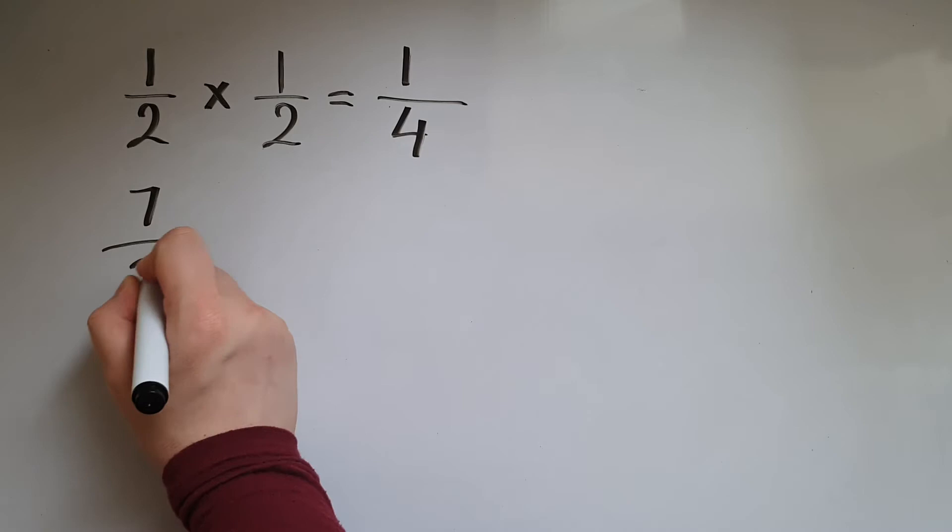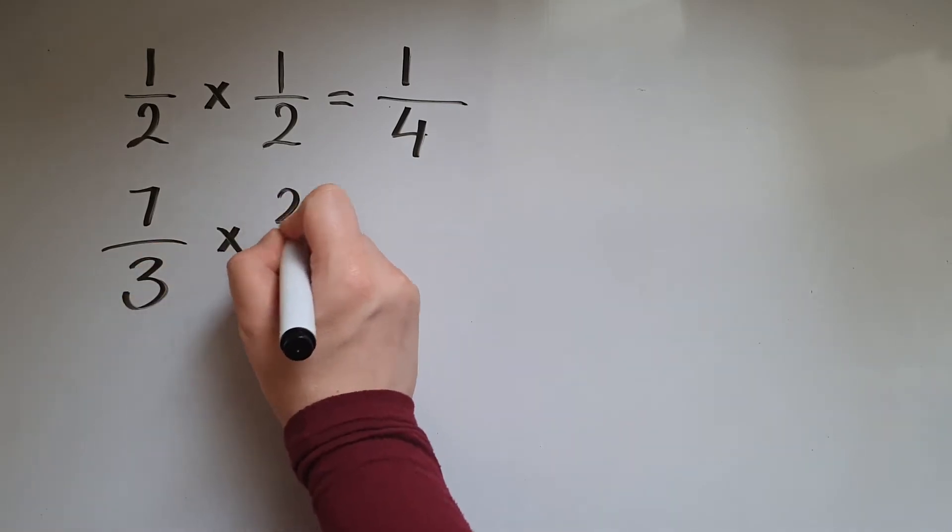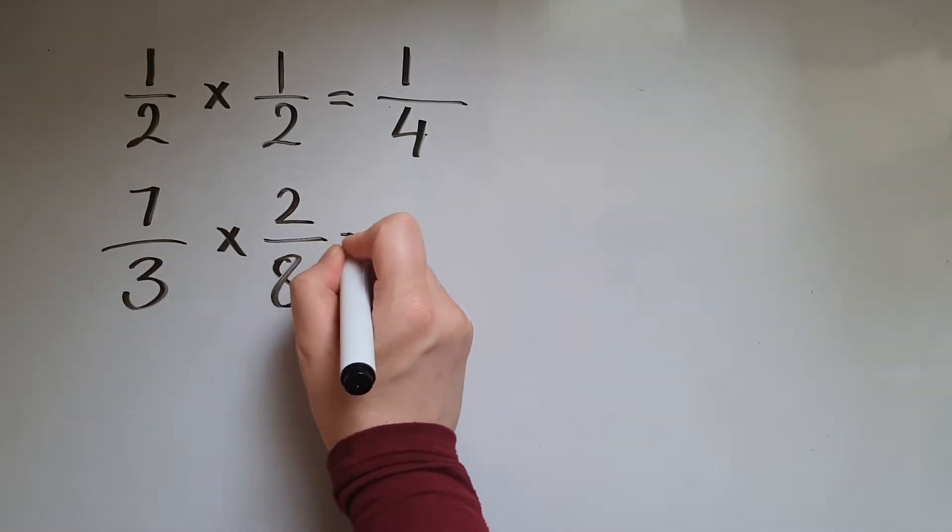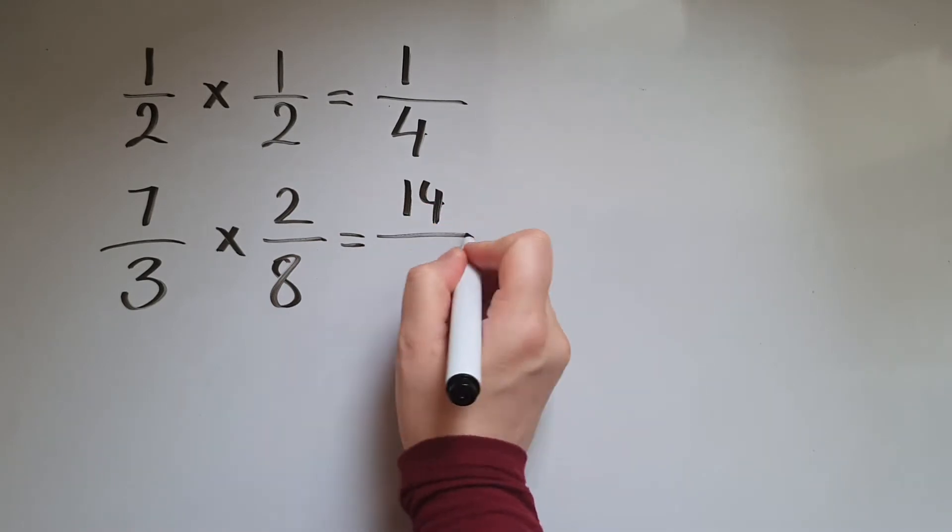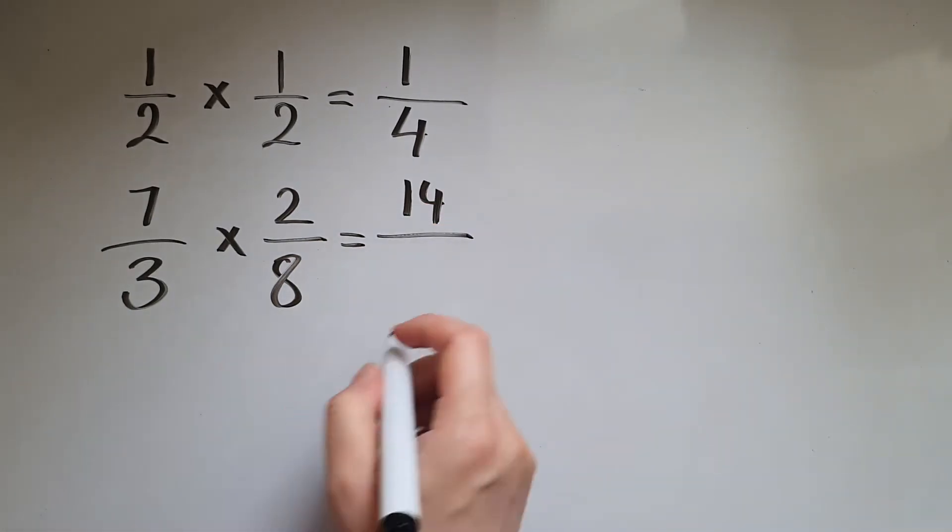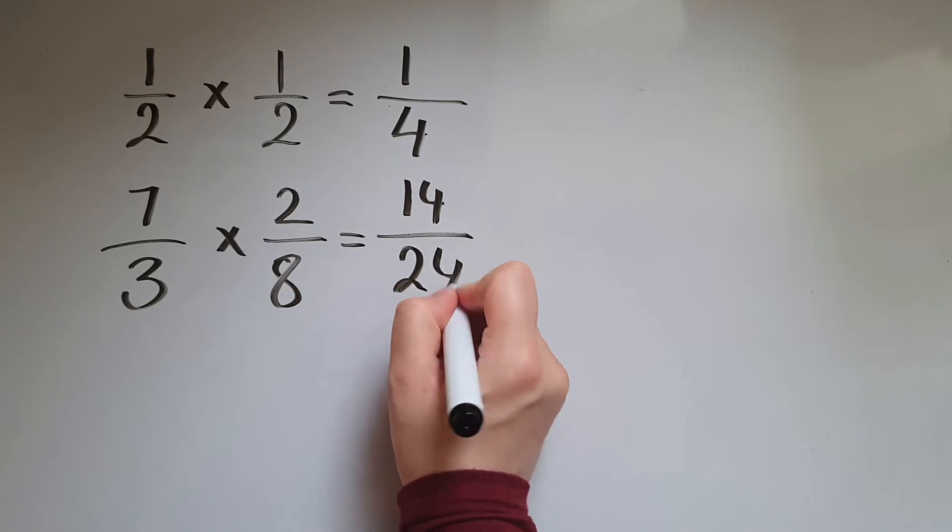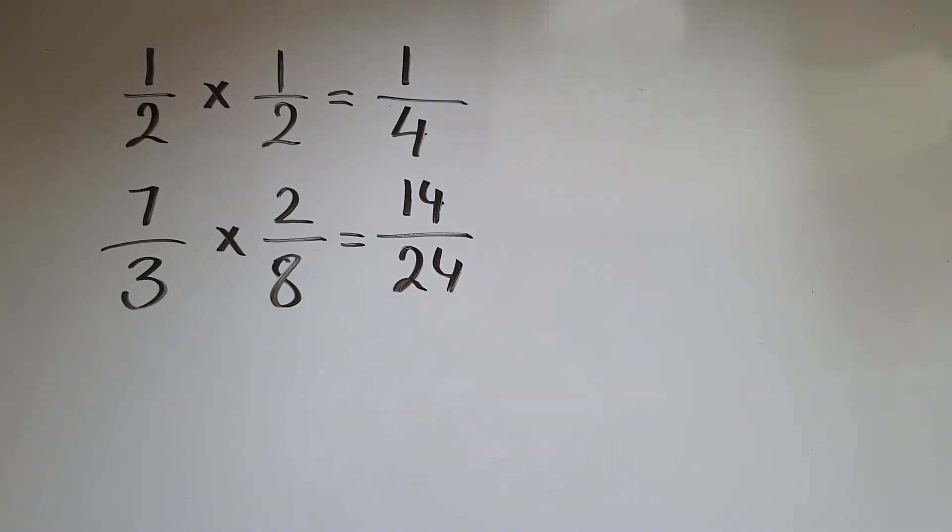So seven thirds times two eighths, that would be 14, and that's then 24. So it's a straightforward process, but what does that mean?